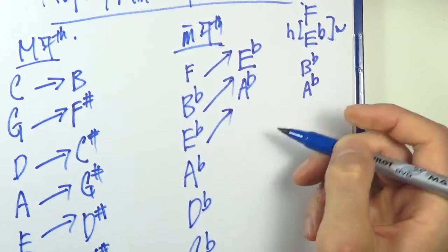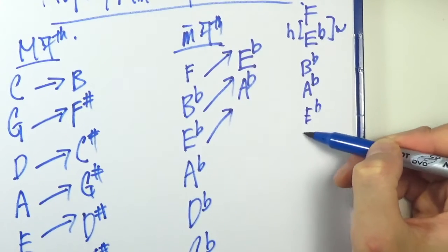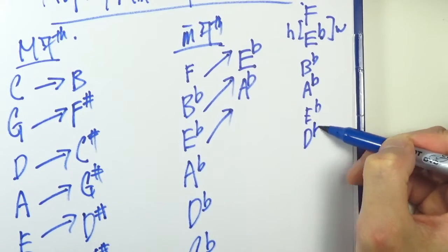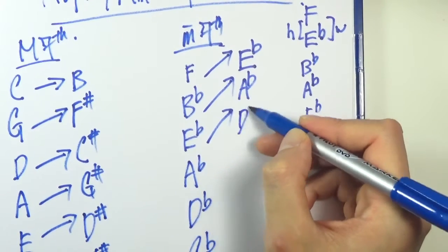E flat. Again, so E flat D. So probably D flat, right? D flat E flat. Is that a whole step apart? Bingo. So D flat.